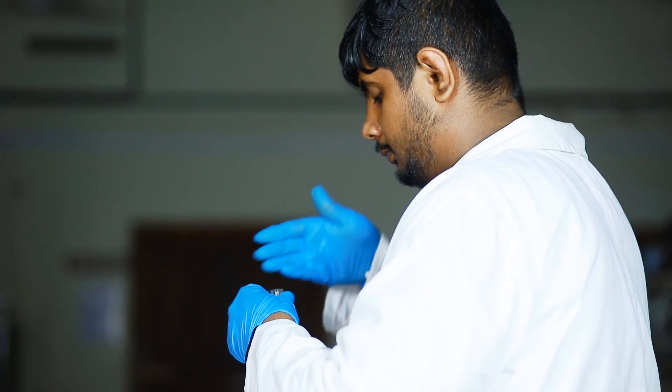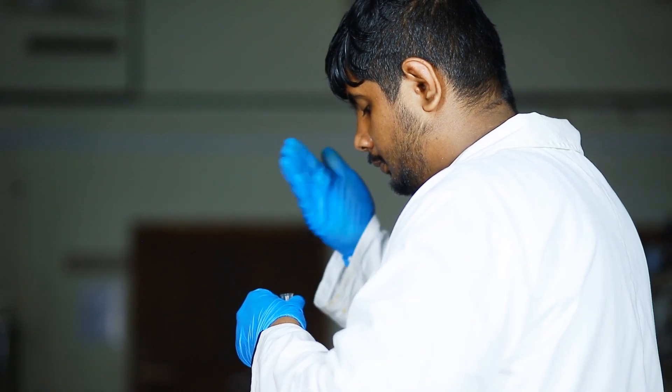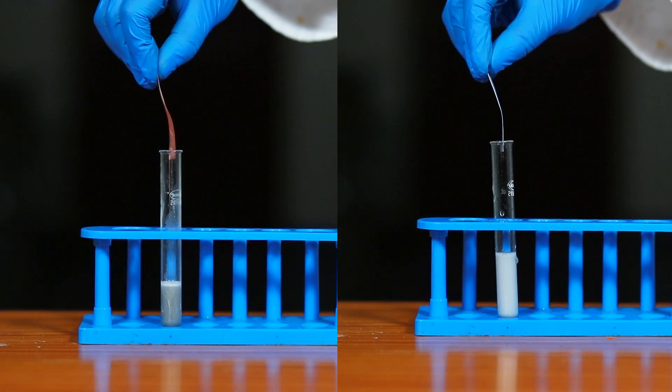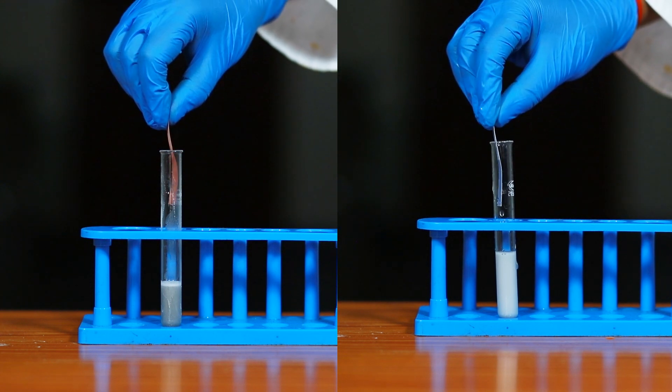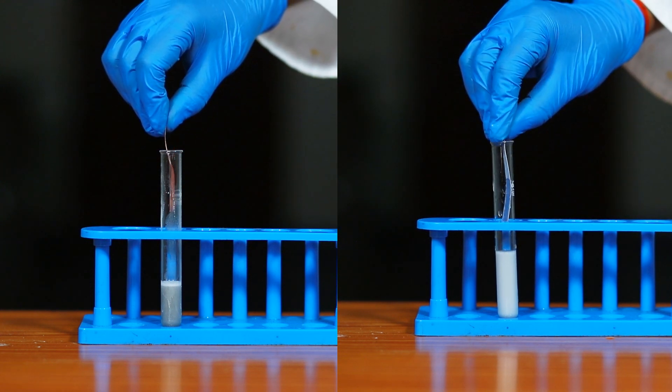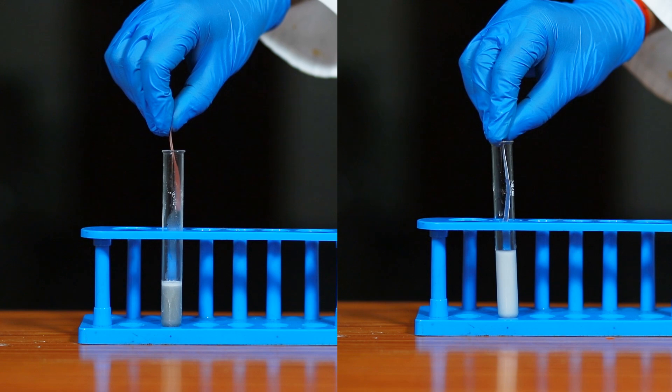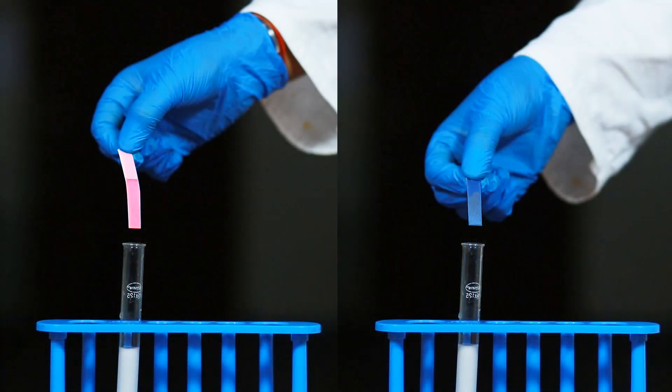There will be no smell for the liberated gas. Then conduct a litmus test by bringing the moist blue and red litmus papers to the mouth of the test tube when gas is liberating. We observe that red litmus stays red and blue litmus stays blue.